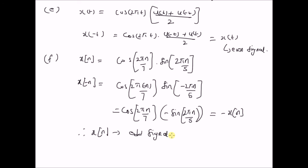Thus, given a signal x(n) or x(t), we can easily verify whether it is even, odd, or neither by determining x(−n) and −x(n). If x(n) = x(−n), it is an even signal. If x(−n) = −x(n), it is an odd signal. If neither condition holds, then x(n) or x(t) is neither even nor odd.